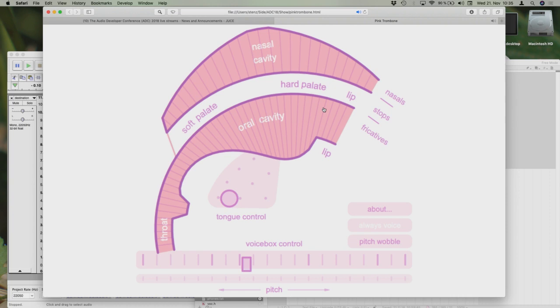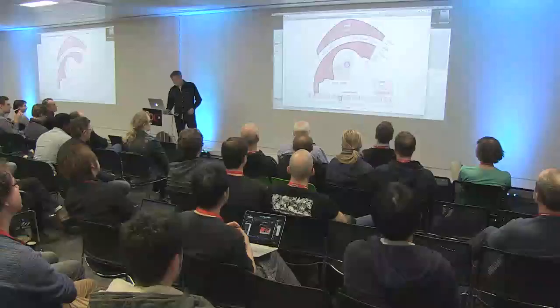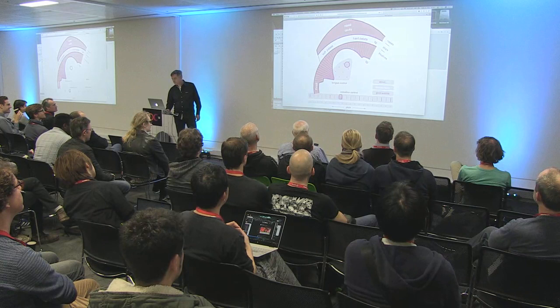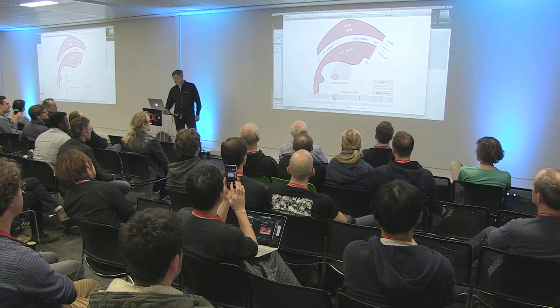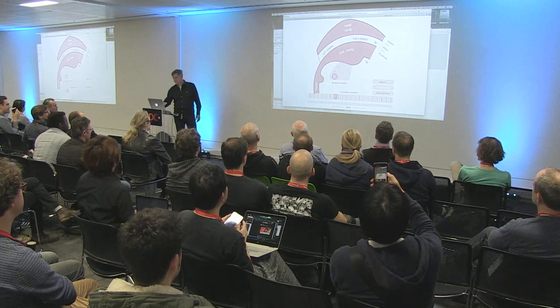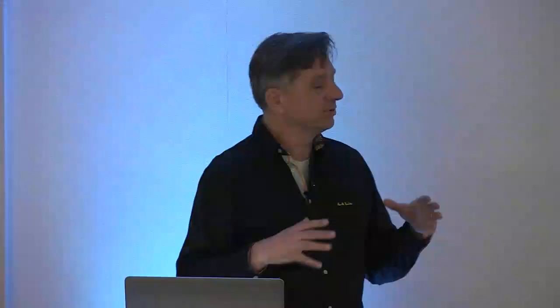In the Pink Trombone demo, we can produce an E and then an A. You can see these are vowels — A and E differ by the shape of the vocal tract, which results in different formant frequencies. We'll come to that later.